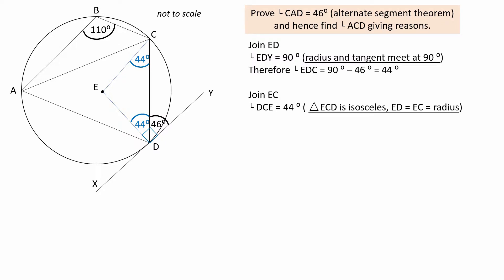Give the reason, either triangle ECD is isosceles, or EC equals ED equals the radius of the circle, or both.